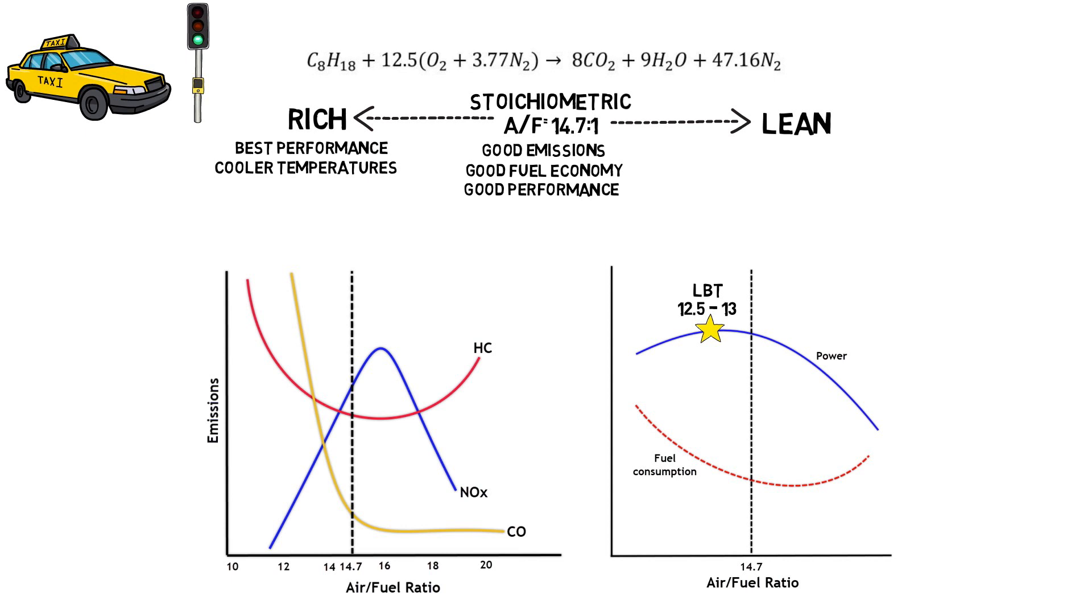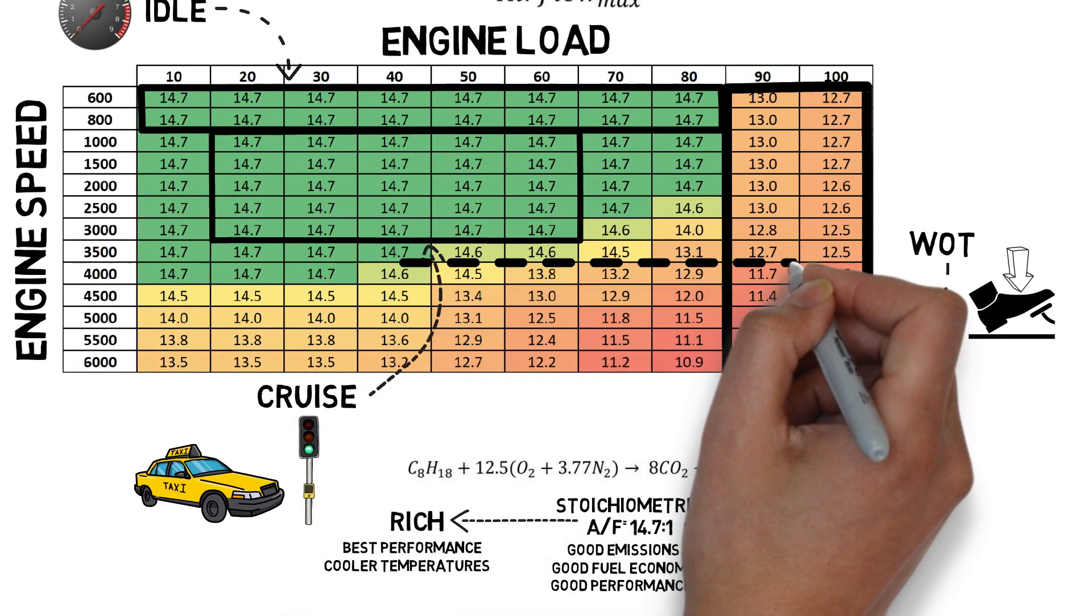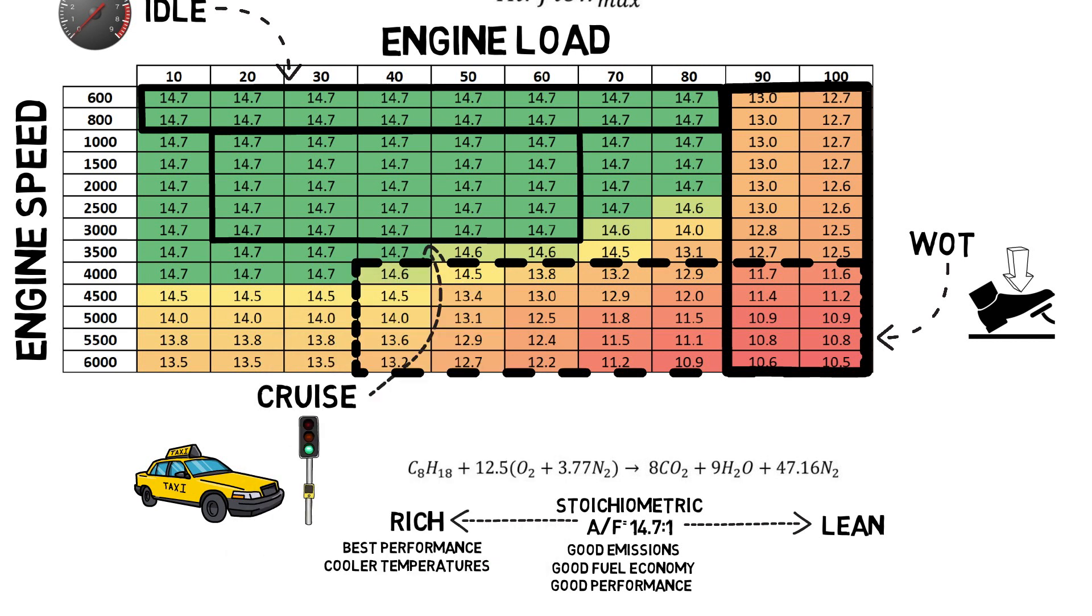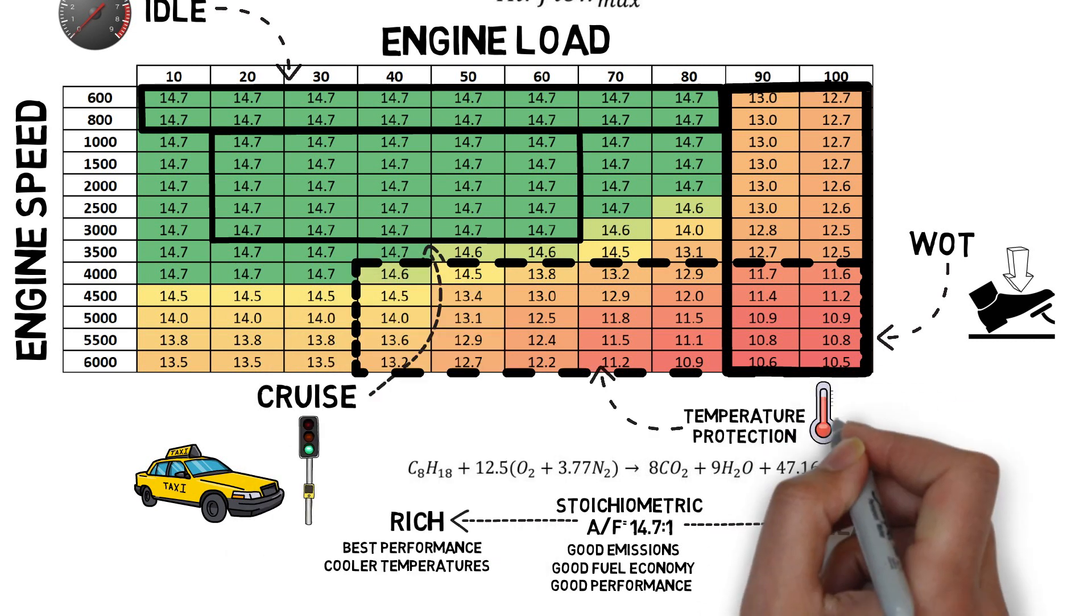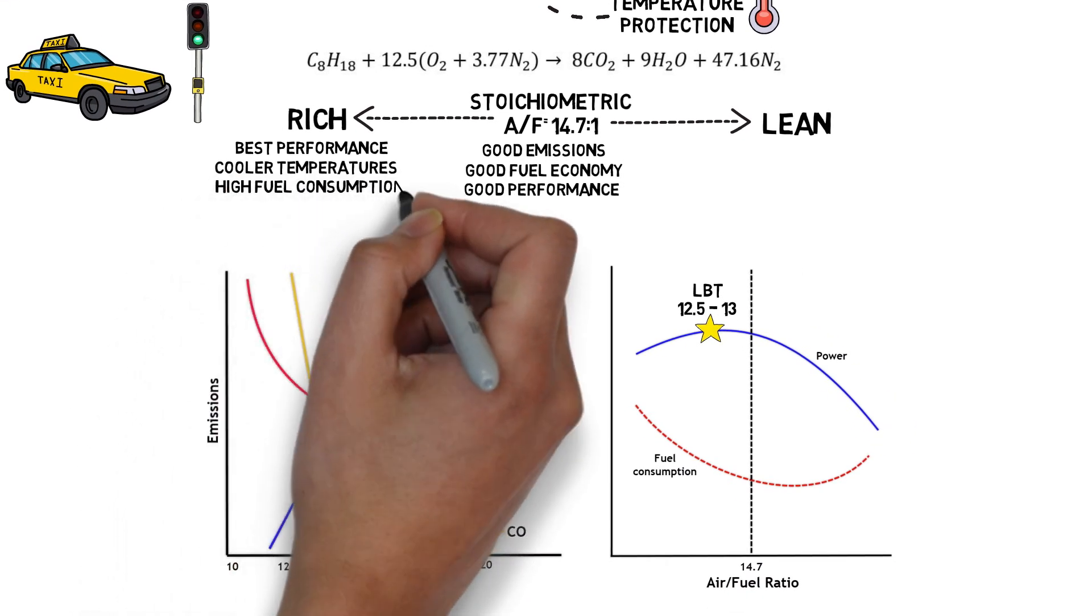Therefore, mixtures leaner than LBT are preferred when possible, which means there is often room for improvement when it comes to power. Some high speed high load areas can't avoid significantly rich ratios in order to keep engine temperatures at a safe level. The obvious disadvantage is high fuel consumption and increased CO and HC emissions.